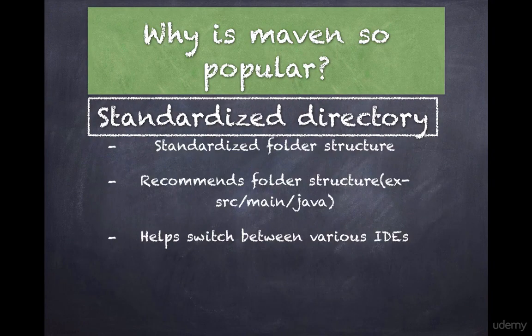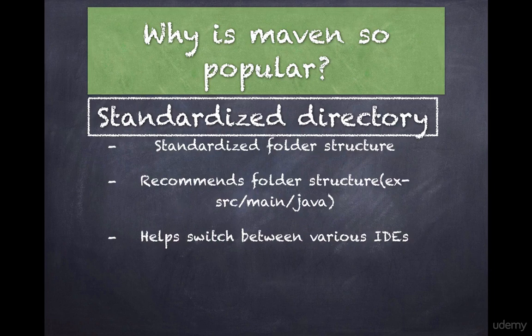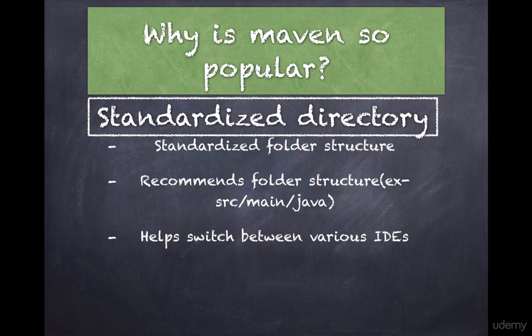Let's look at some of the reasons why Maven is so popular. The first reason is that it provides a standard directory structure. Often when we start a new project, considerable time is spent deciding on the project layout and folder structure for code and configuration files. These decisions can vary across projects and teams, making it difficult for new developers to understand and adopt other team projects. Maven addresses this by standardizing the folder structure — for example, it suggests all Java source code should be placed in the source/main/java folder.